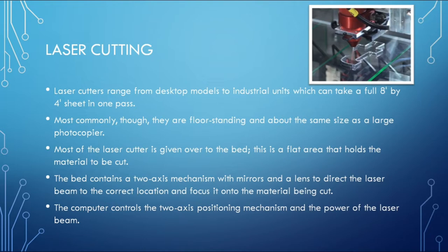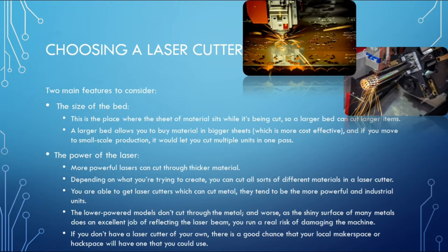The laser cutter is the best item to have in your workshop for making physical design prototypes. Laser cutters range from desktop models to industrial units which can take a full eight-by-four-inch sheet in one pass. Most commonly they are floor-standing and about the same size as a large photocopier. Most of the laser cutter is given over to the bed — a flat area that holds the material to be cut. The bed contains two-axis mechanisms with mirrors and a lens to direct and focus the laser beam onto the material. Laser cutting is called a subtractive method as it cuts off the unimportant parts.